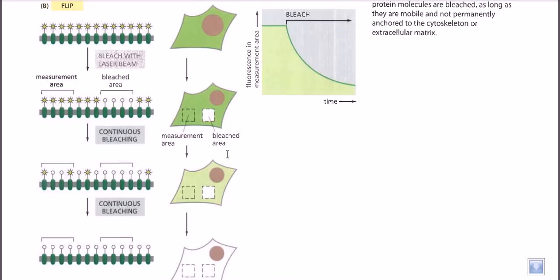When we record our data and plot a graph with fluorescence on the Y-axis and time on the X-axis, we can clearly see that fluorescence activity decreases over time. Before bleaching, fluorescence is at its highest level. After the bleaching event, there is a notable fall in fluorescent activity across the unbleached region.